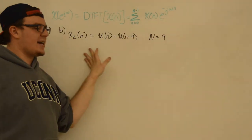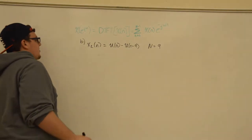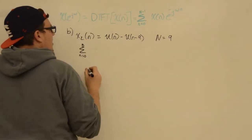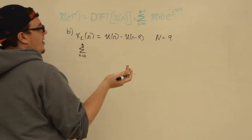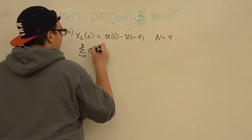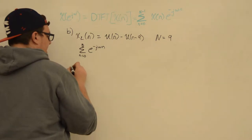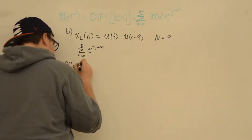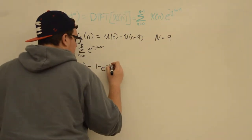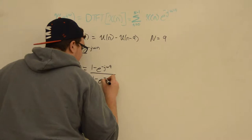Now we move on to the second function, which is just a switch on/switch off function. Directly applying our formula, we get a summation from n = 0 to 8. It's a switch function, so the value is just 1, meaning all x(n) values are 1 times e^(-jωn). Applying the geometric series formula, we get x(e^(jω)) = (1 - e^(-j9ω)) / (1 - e^(-jω)).